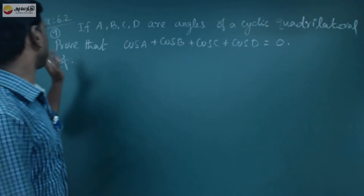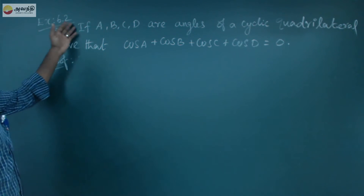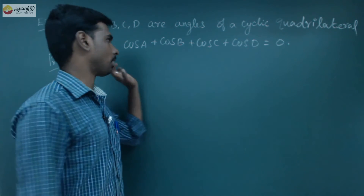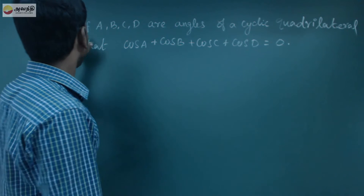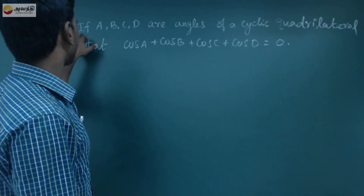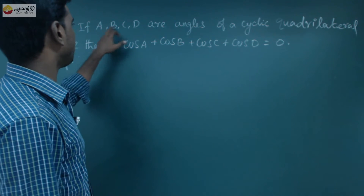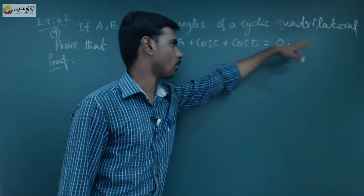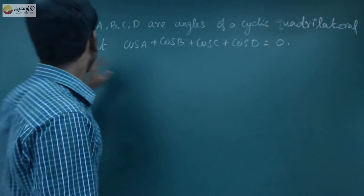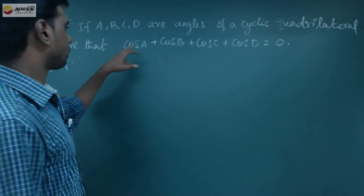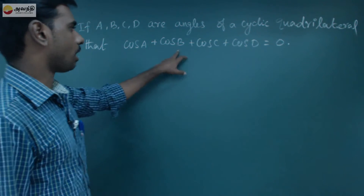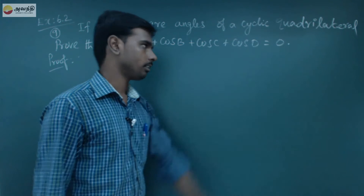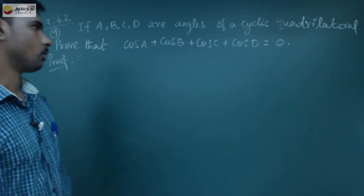Next, let's go to exercise 6.2. The problem states: if a, b, c, d are angles of a cyclic quadrilateral, prove that cos a plus cos b plus cos c plus cos d equals 0.